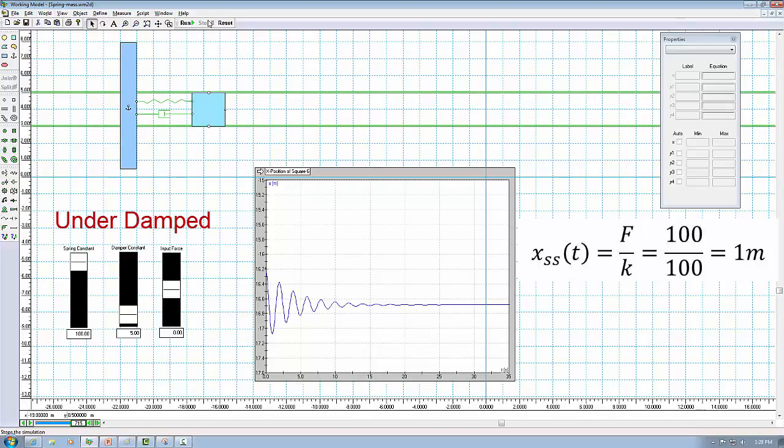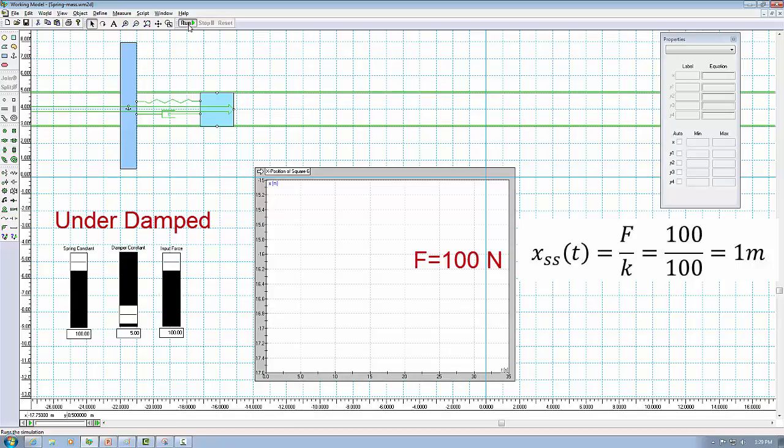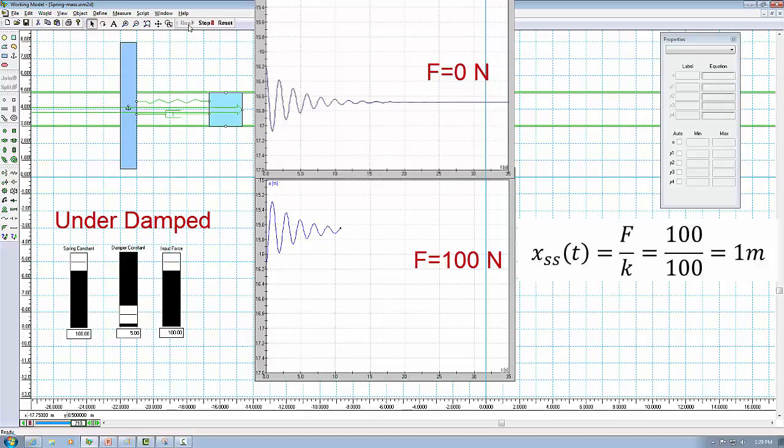And now we're going to change the input force to 100 N. Now the system is having some damped oscillation as before. Again, it will take a little while to come to a steady-state. Okay, so now the system is coming to a steady-state. There is no oscillation at all.